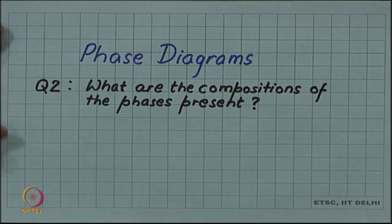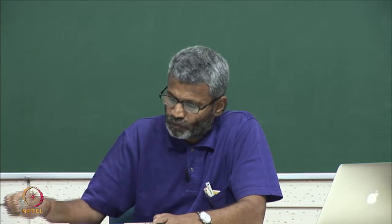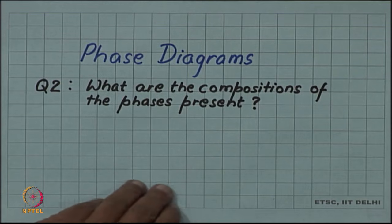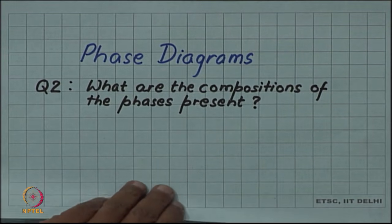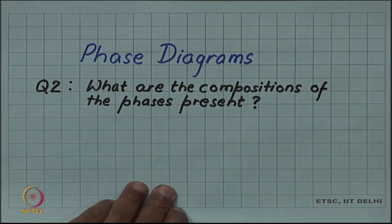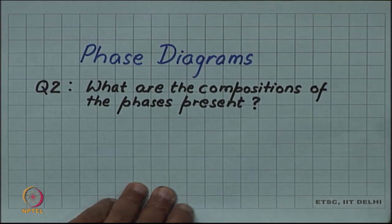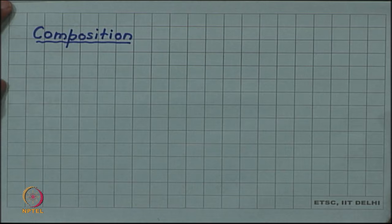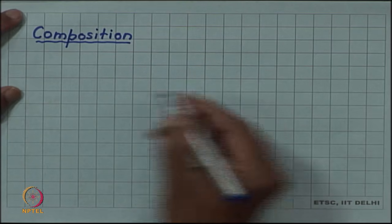Let us now take up the second question in our list: what are the compositions of the phases present? Recall the first question was what are the phases present. Once we have answered that question, we know what phases are in equilibrium at a given composition and at a given temperature in the alloy. Now, once we know the phases, the second question we want to answer is what are the compositions?